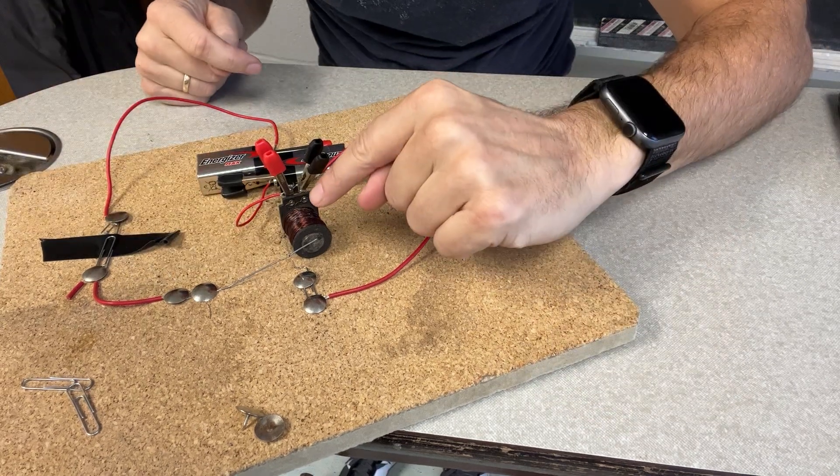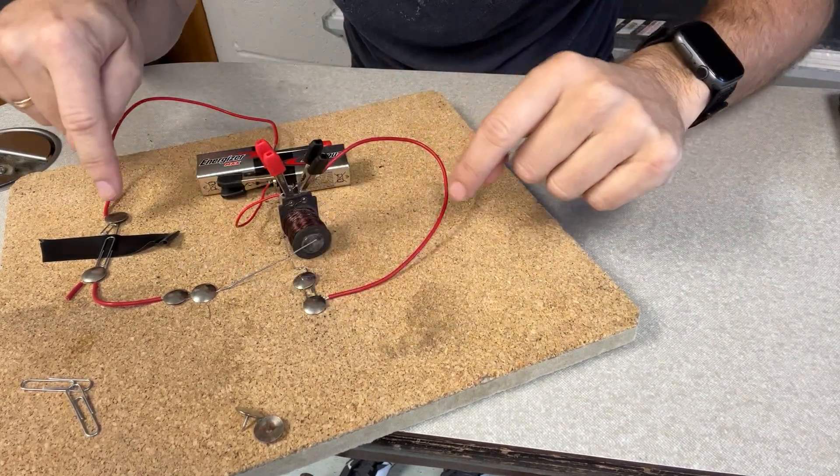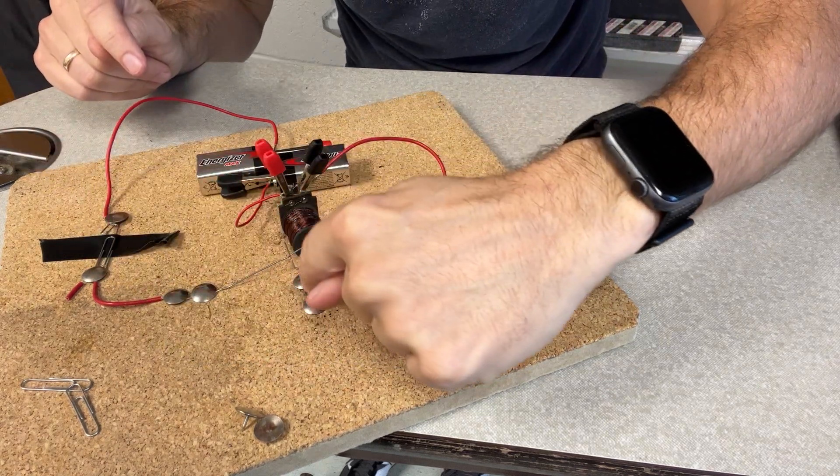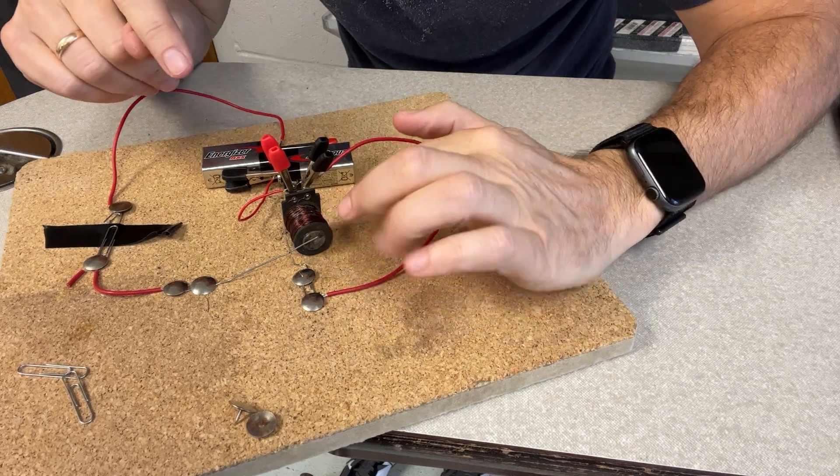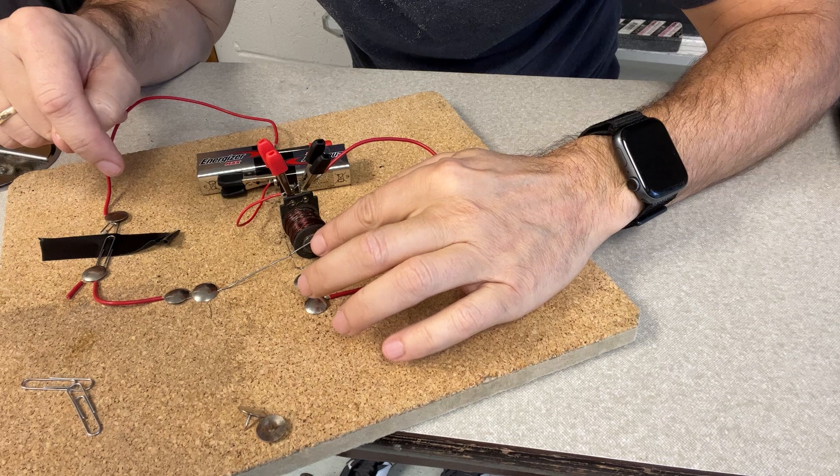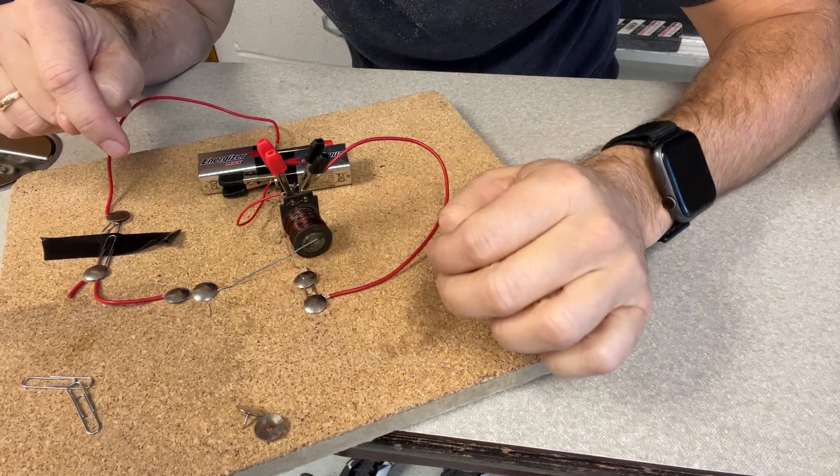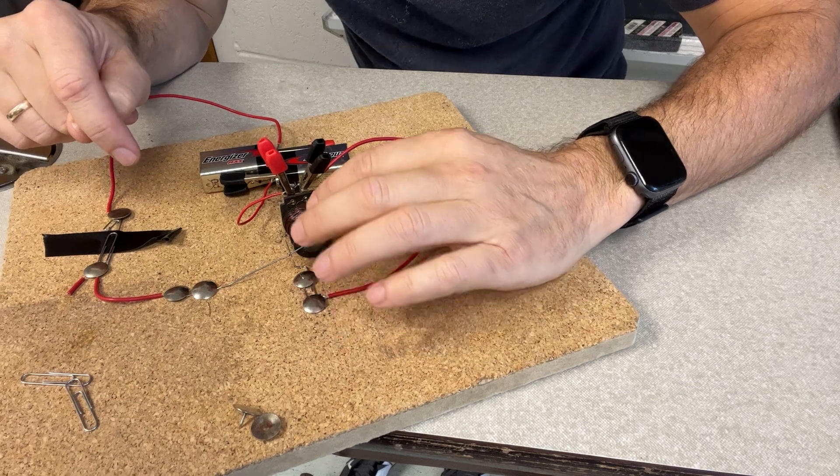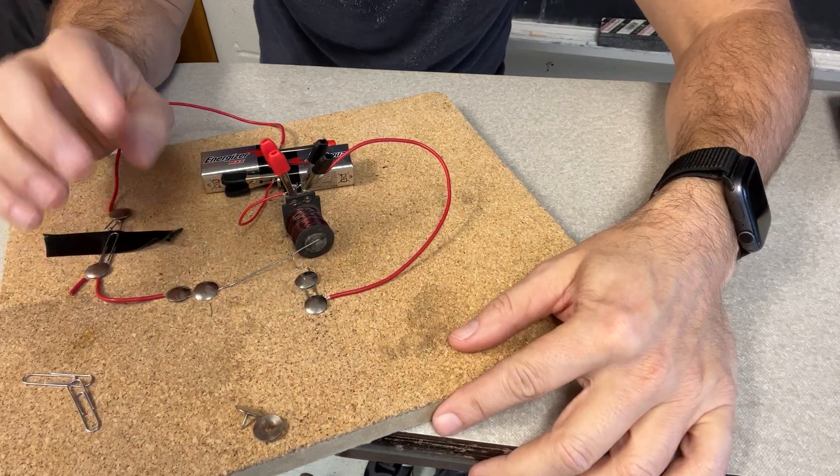If I push that down, this becomes an electromagnet and it pulls this paper clip towards it. Then it doesn't touch that post so it turns off. When it turns off there's no magnet and it goes back. So this makes the buzzing sound where it turns on and off.